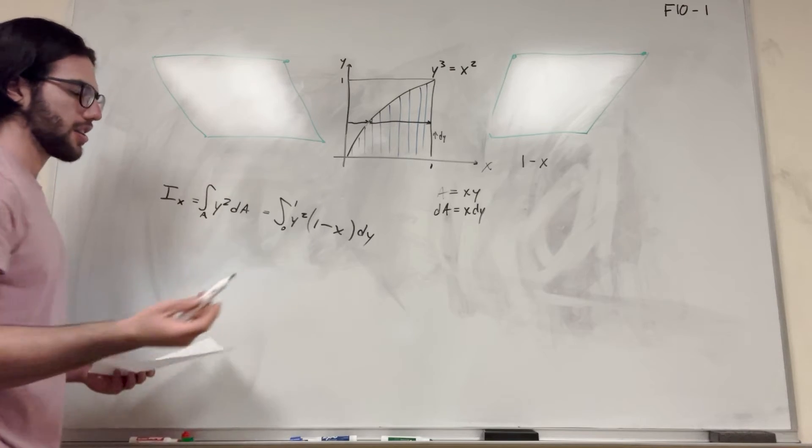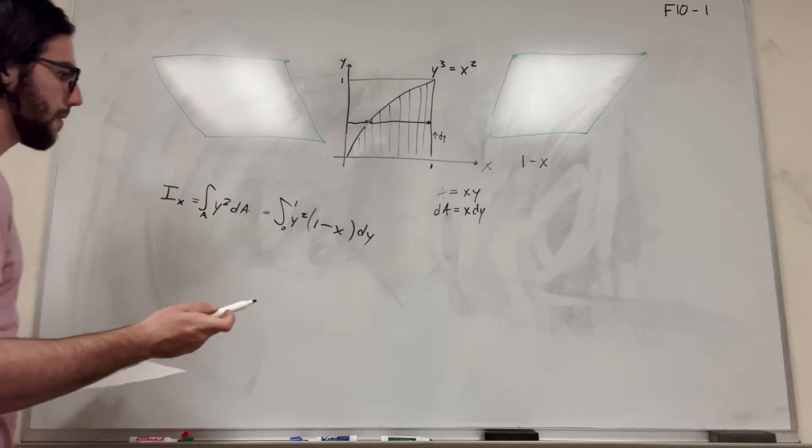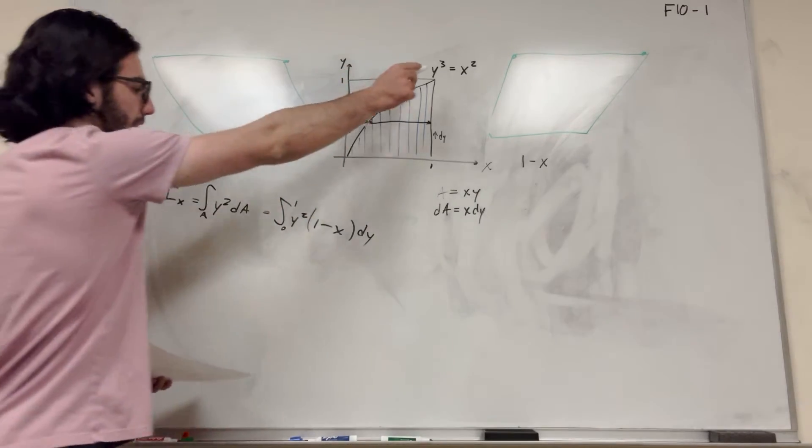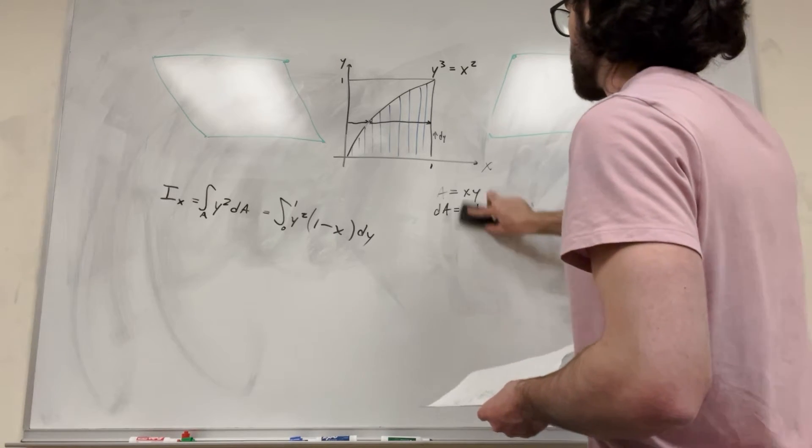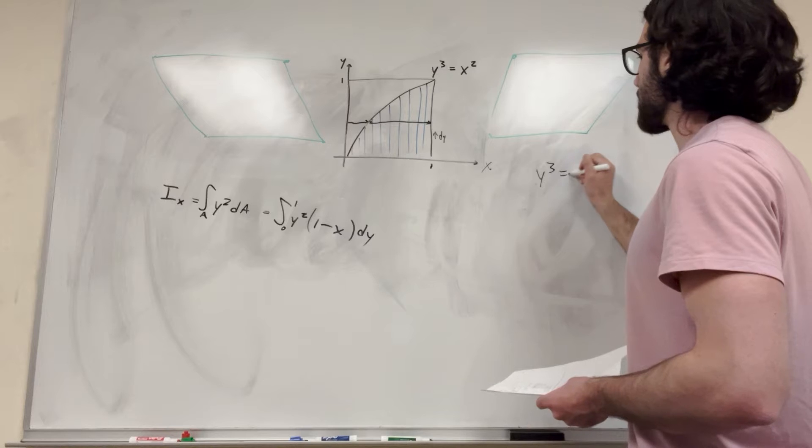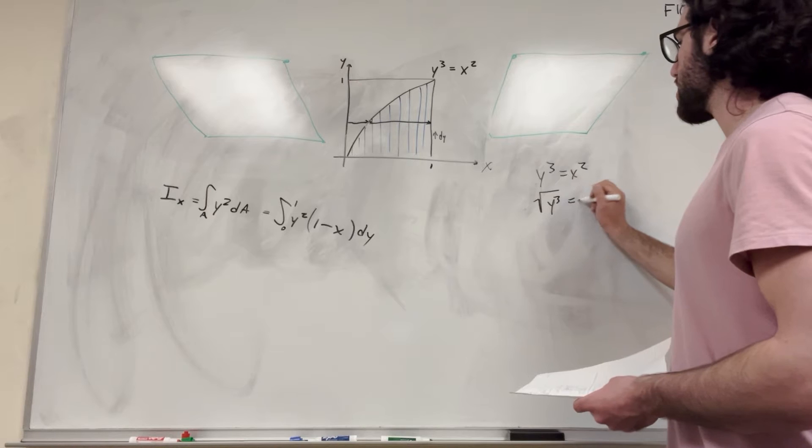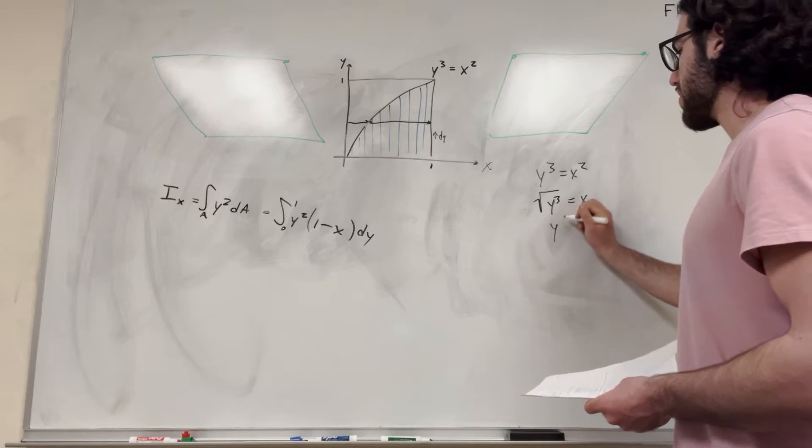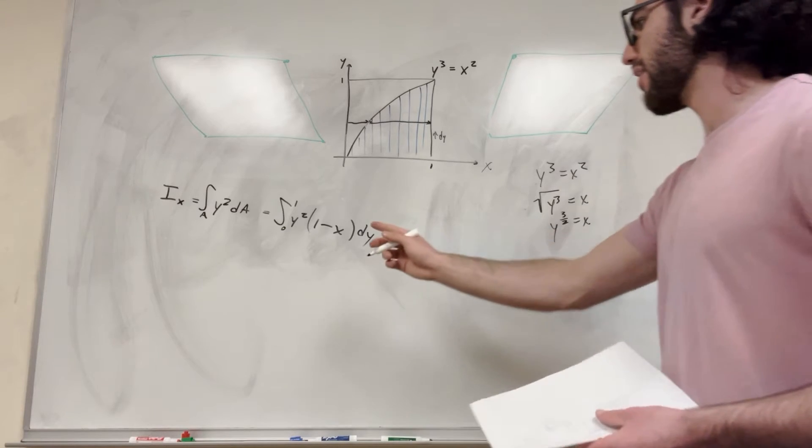So now we have an x and a y in our integral and we can't solve this, so we need to go further and simplify this. So what is x? We need to find x in terms of y. Luckily we're given this right here. So if we want to find x in terms of y, we're going to take y to the third is equal to x squared and we're going to take the square root. So it's square root of y to the third is equal to x. This can be simplified as y to the 3 over 2 is equal to x. We're going to put that right in here.